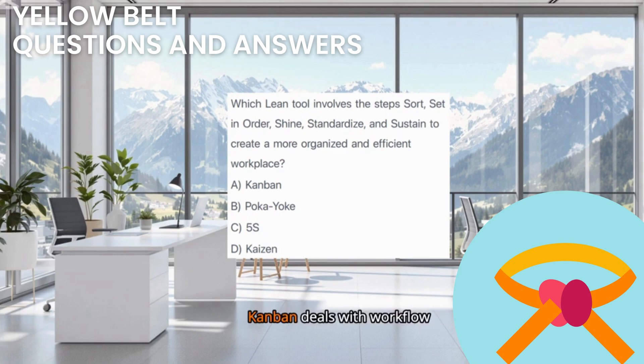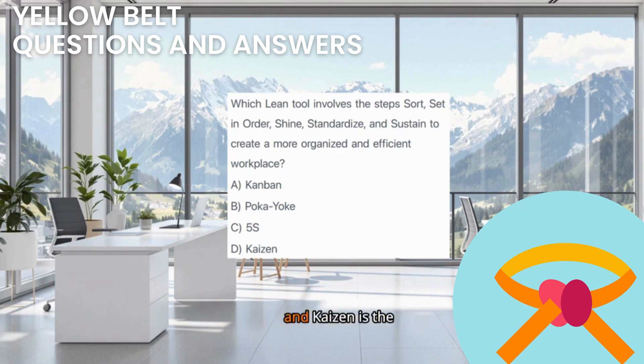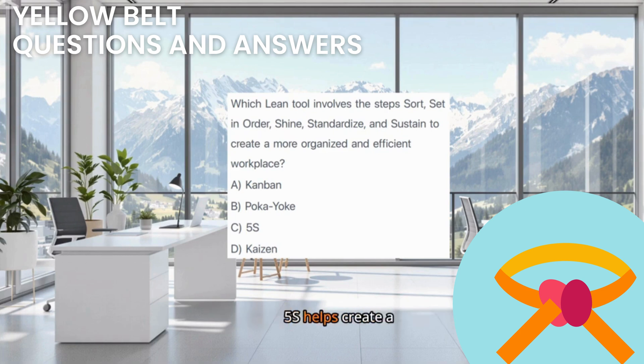Kanban deals with workflow signals. Poka-yoke deals with error proofing. And Kaizen is the philosophy of continuous improvement. 5S helps create a foundation for efficiency and quality.